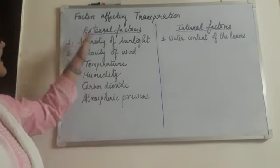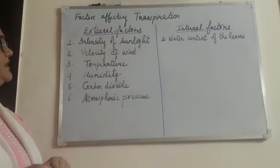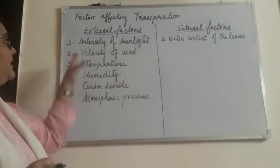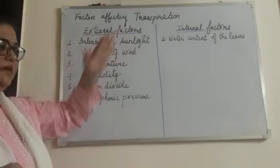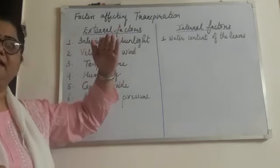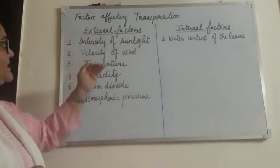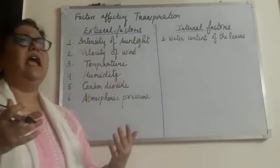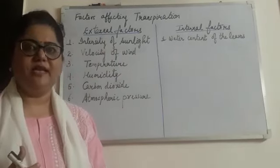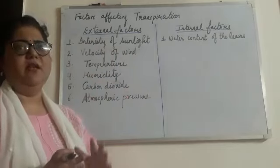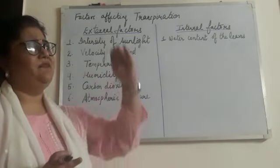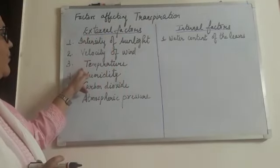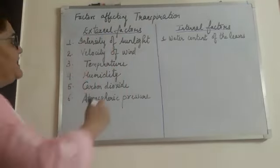So if sunlight is there, then transpiration will also occur. With the intensity of light, transpiration will also increase. As the sunlight will be more intense, transpiration will be the same. But as more light increases temperature, there will be a point when intense light will also stop transpiration. This point is very much related to the third factor I have written here: temperature.